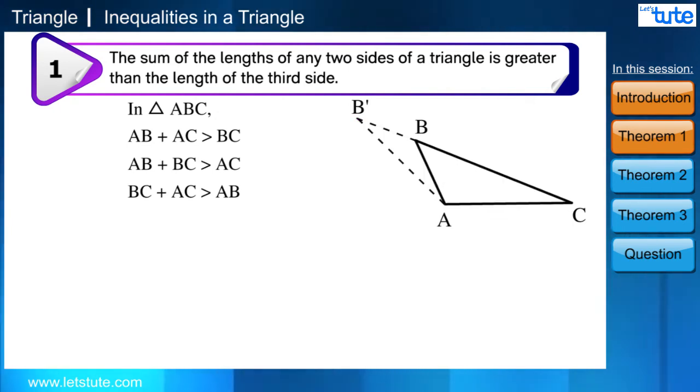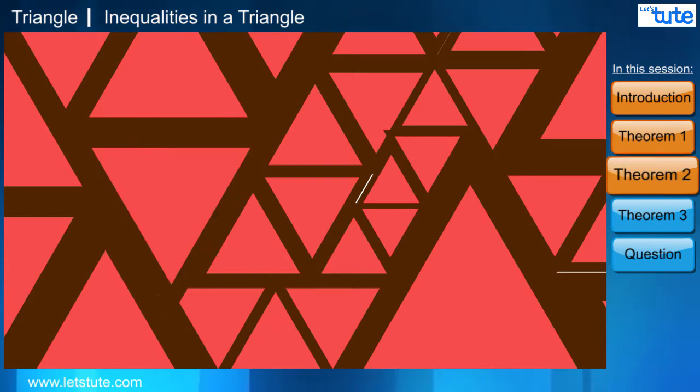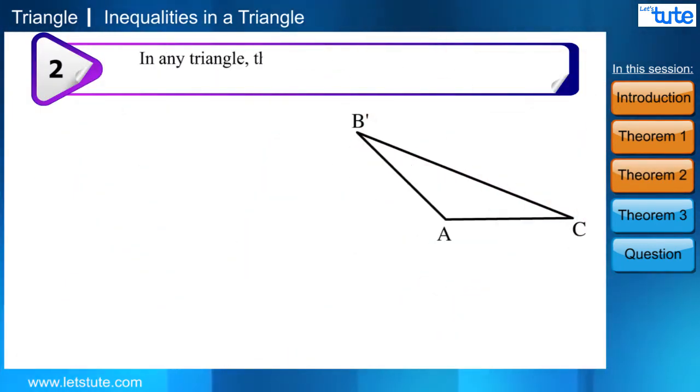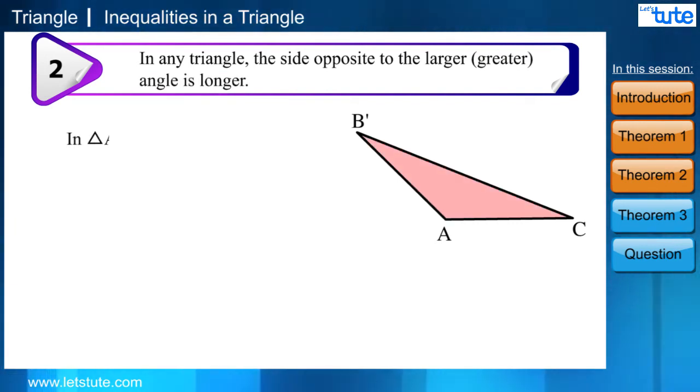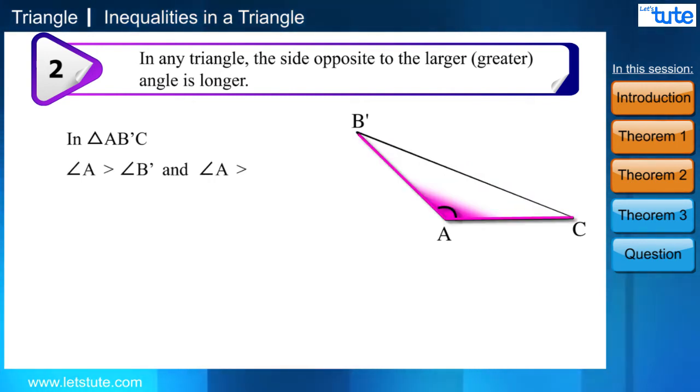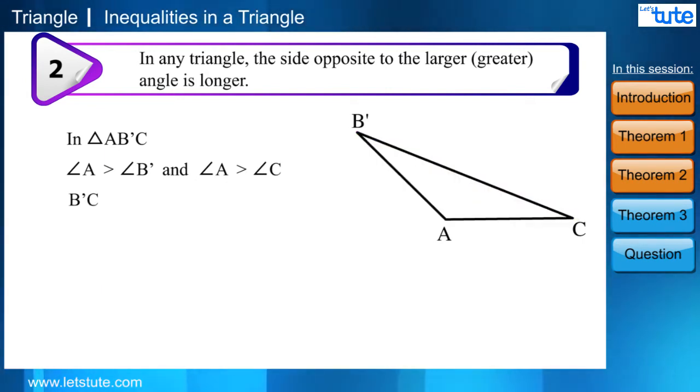And based on this condition, there are two theorems which are theorem 2. In any triangle, the side opposite to the larger or greater angle is longer. In triangle AB'C, angle A is greater than angle B' and angle A is greater than angle C. B'C is greater than AC and B'C is greater than B'A.